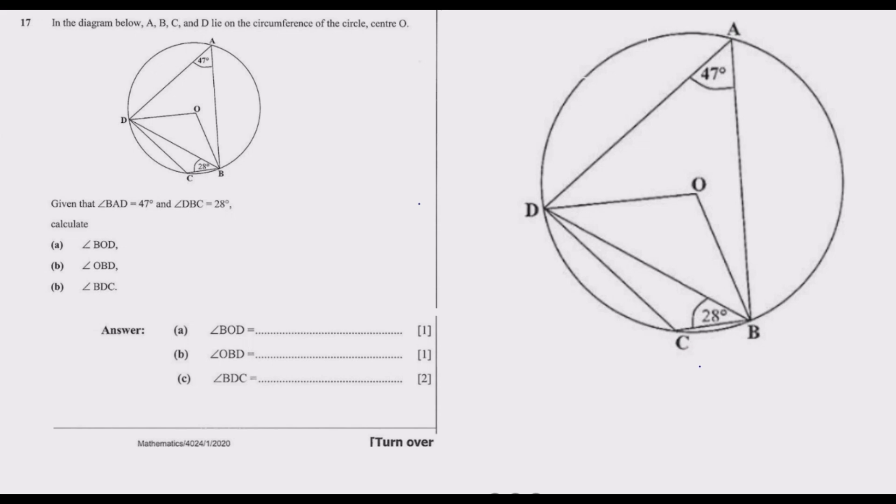We have a question from the circle theorem. The first thing we need to know is what angles we can find. We know the angle at the center is twice the angle at the circumference. So if this is 47, to find the angle at the center, which is DOB, we multiply 47 by 2, which is 94 degrees.